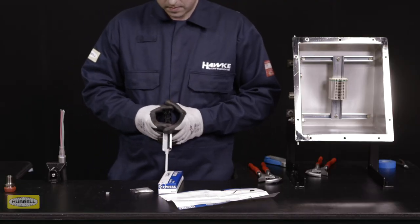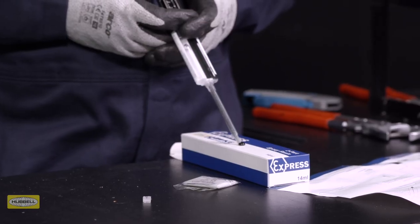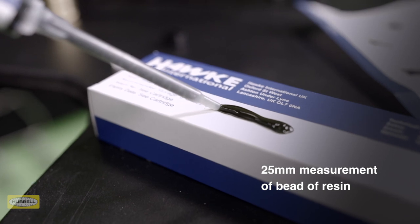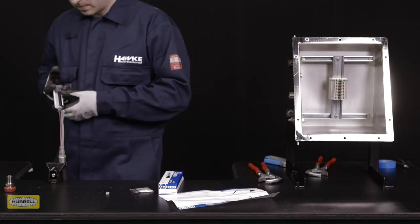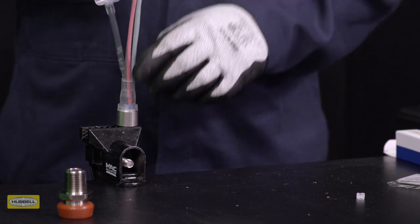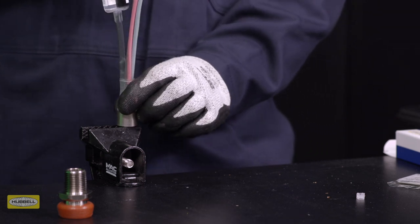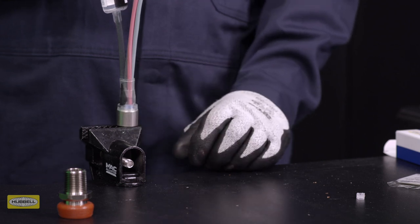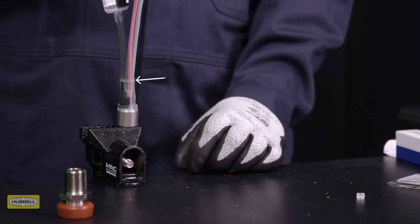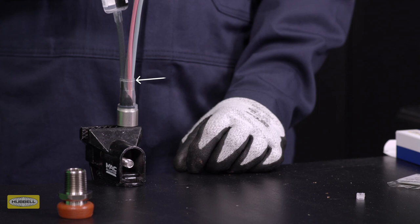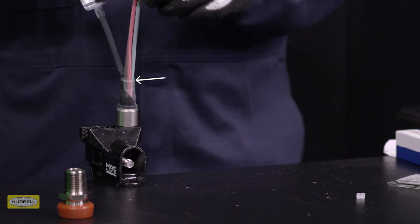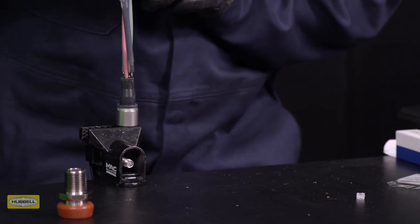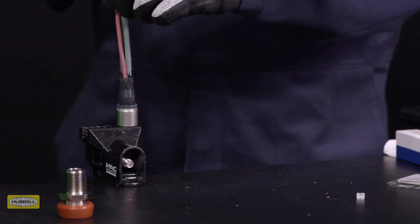Purge approximately 25 millimeters or one inch of resin onto a disposable surface to ensure that the resin is properly mixed. Ensure the gland is held vertically with the nozzle starting as far down the pot as possible. Fill the resin to approximately three millimeters under flush. This is indicated on the silicon pot by the fill line shown on screen. Check that the resin is properly filled without any voids.